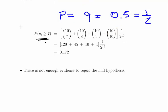So anyway, probability of n greater than or equal to 7. So essentially what we're going to do is calculate our p-value. So 10 choose 7 plus 10 choose 8 plus 10 choose 9 plus 10 choose 10 times 1 over 2 to the power of 10. And here 10 refers to the 10 students.